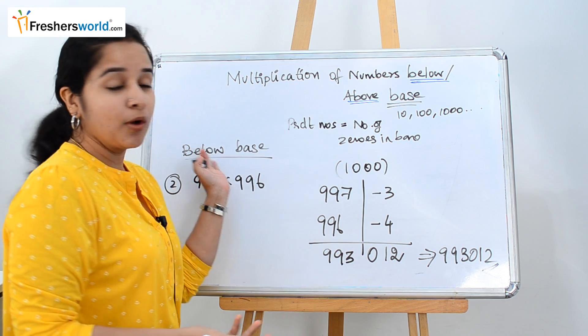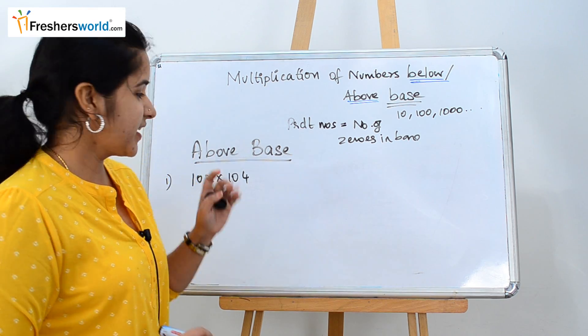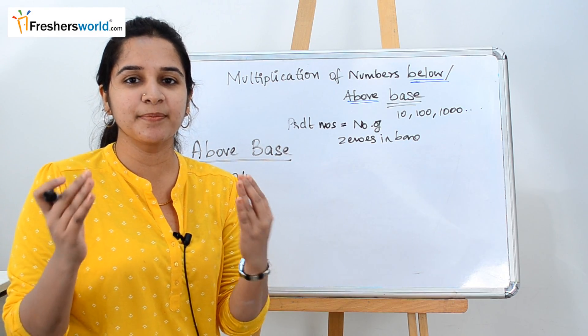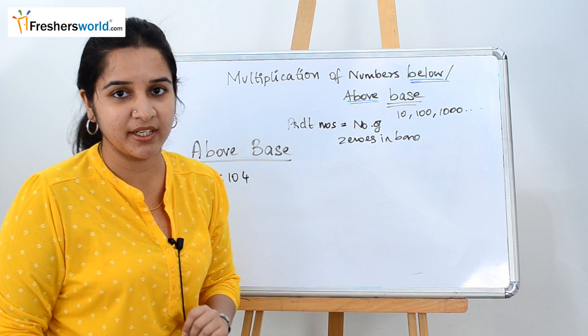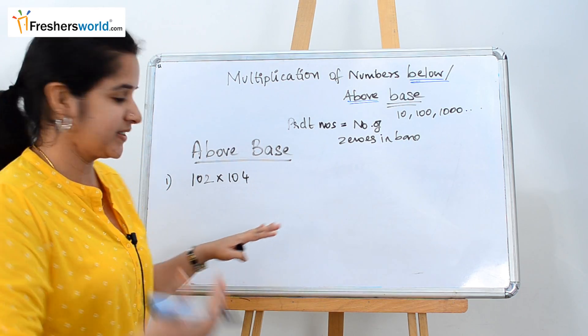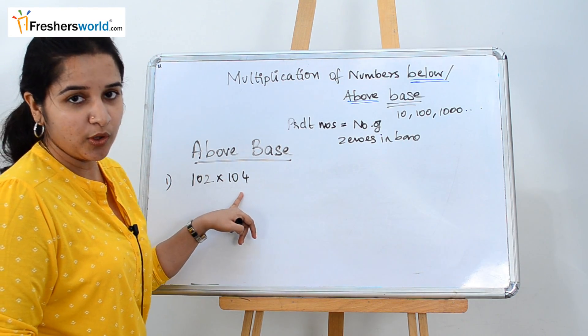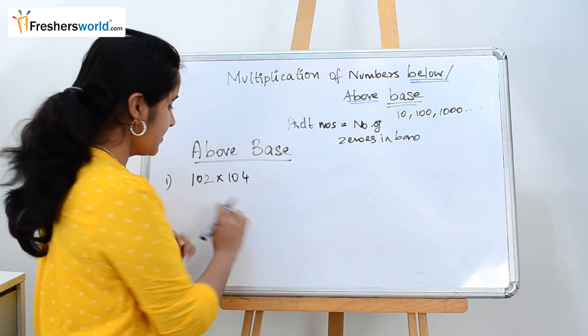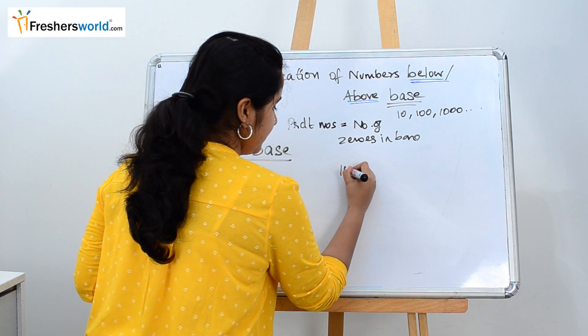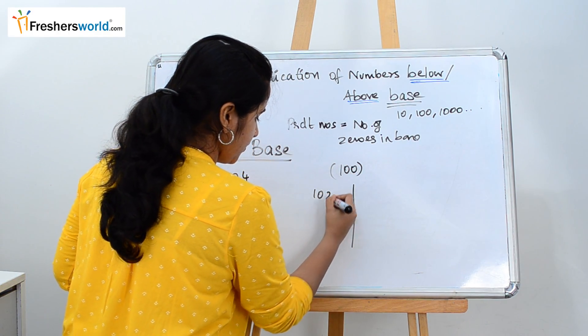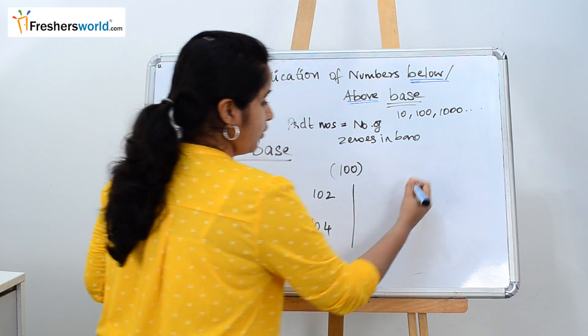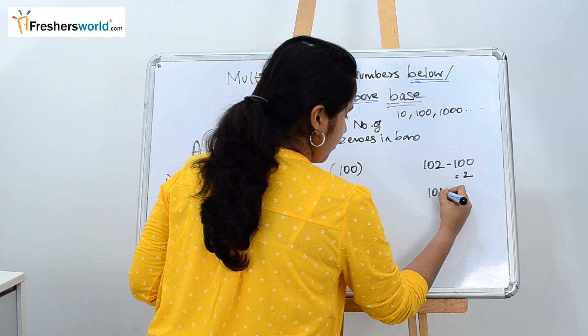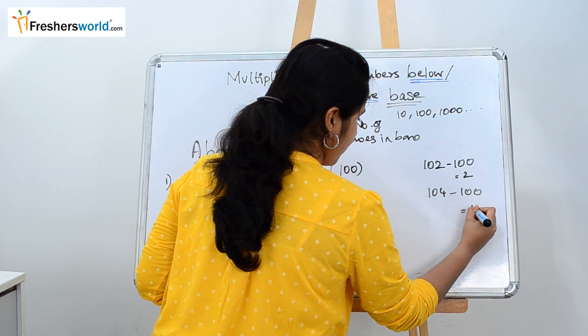Now let's start solving a sum on above the base. So the next one is above the base. Previously we were dealing with below the base, the numbers that were below 10, 100, 1000 or whatever number it is. Now it's above the base. So the number given is 102 into 104. It has the same steps as the previous one. First consider the base. We know that the base is 100 here which is closer to it. 102, 104. Now the number minus the base. So it is 2. 104 minus 100 is 4. So write it here.